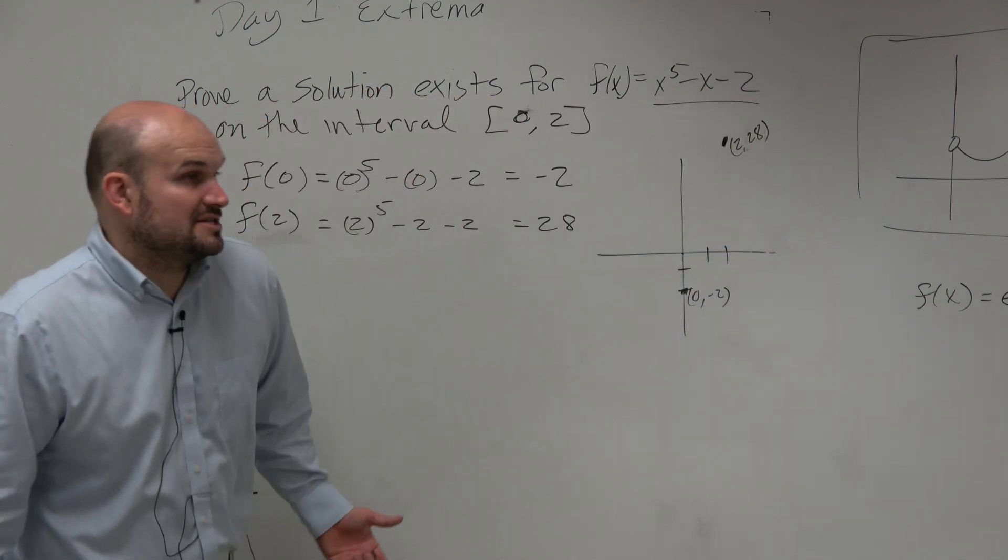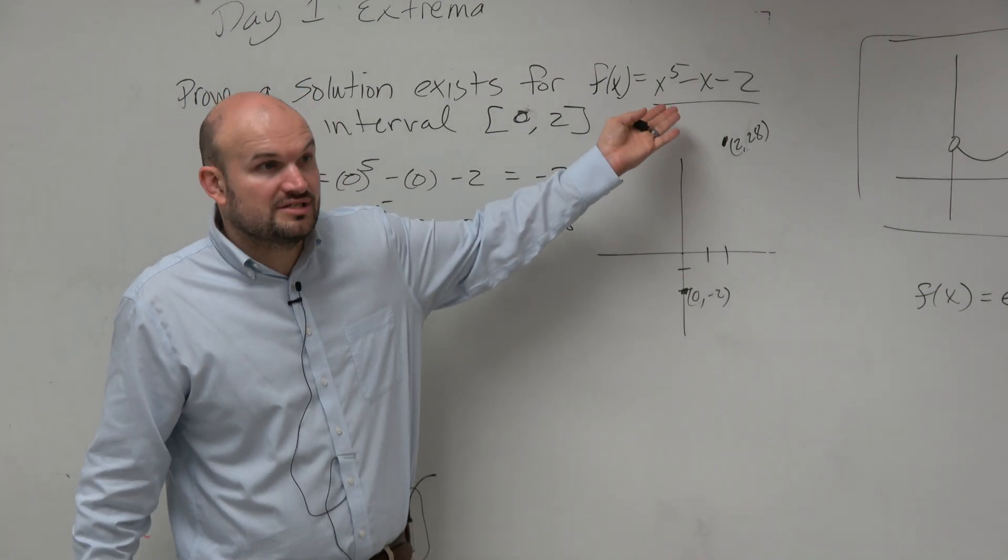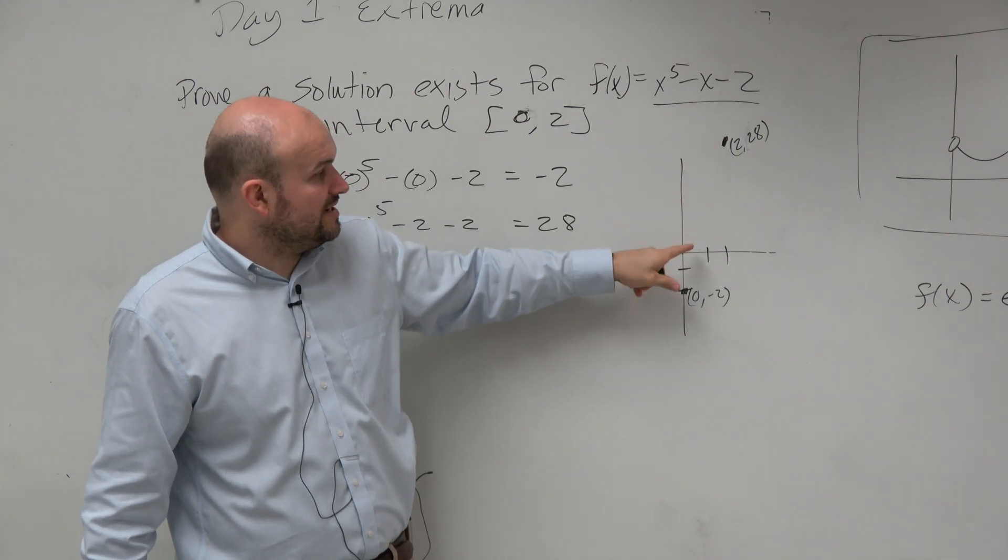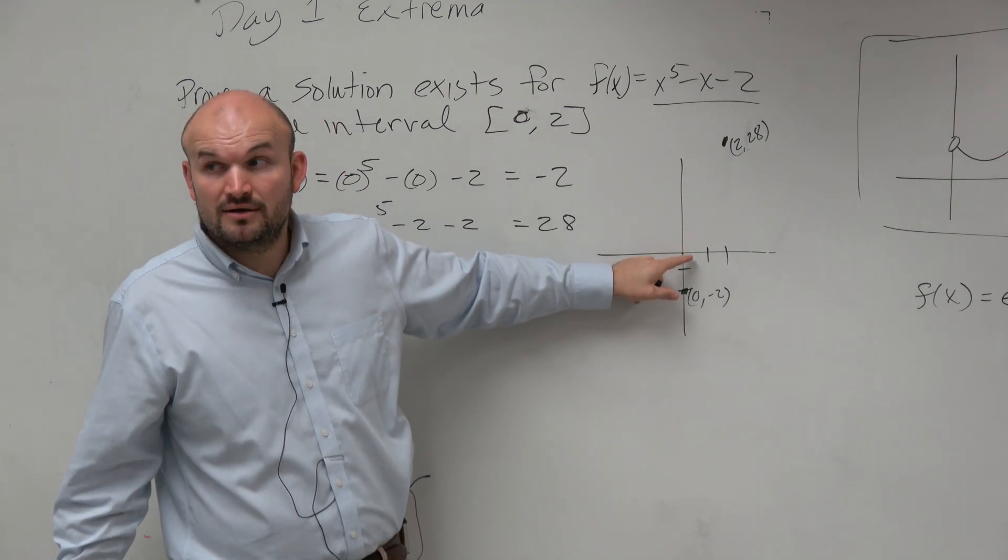So again, we've already shown that this function is continuous. We know this function is continuous. And we have it on a closed interval. So we know somewhere it crosses. Do we know where? No.